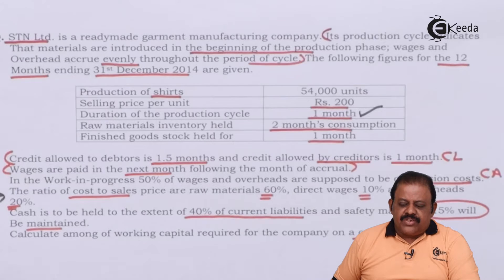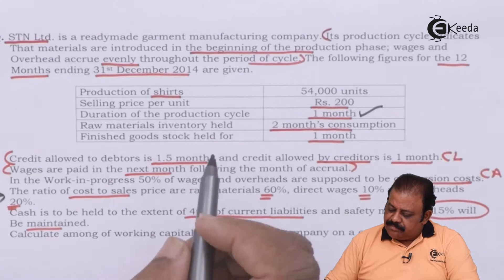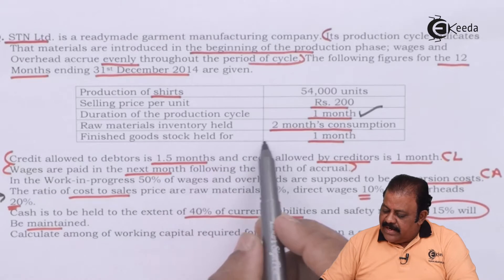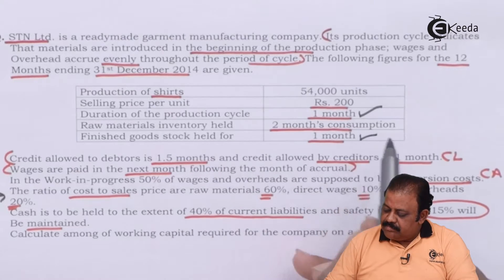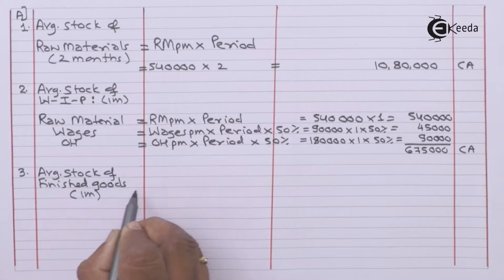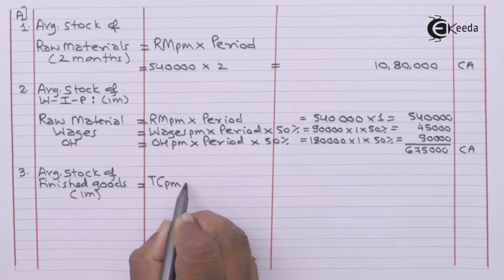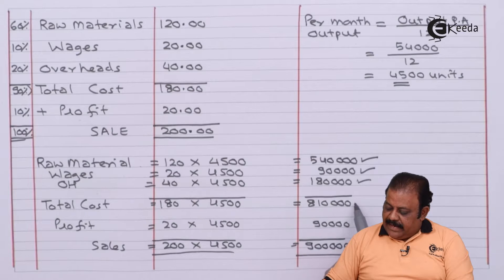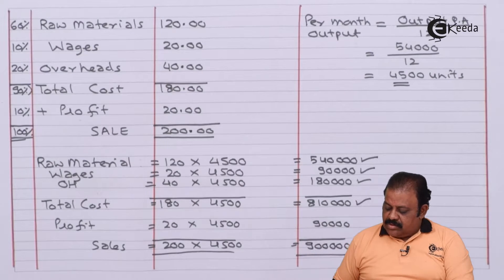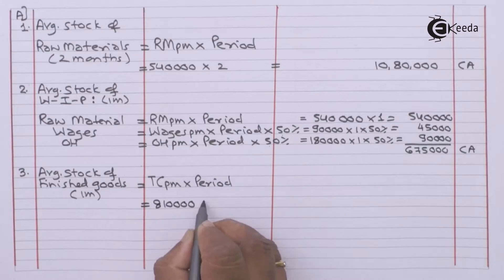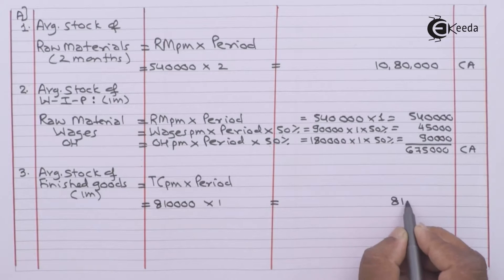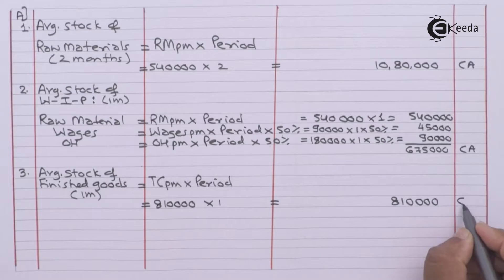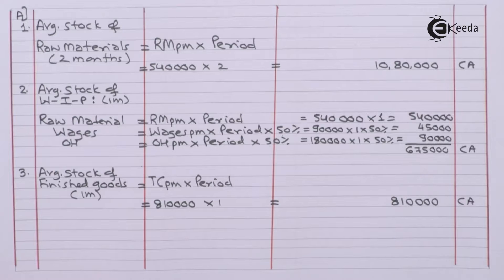Total work in progress stock is rupees 6,75,000 — this will be part of current assets. Average stock of finished goods: finished goods stock held for 1 month, so total cost per month rupees 8,10,000 is taken as the finished goods value. This will be part of current assets.